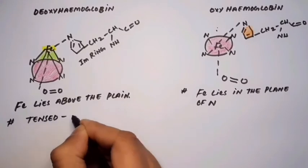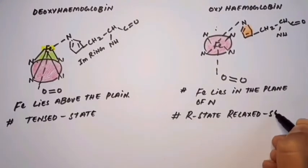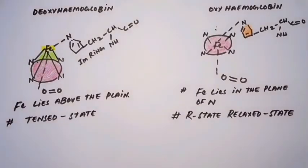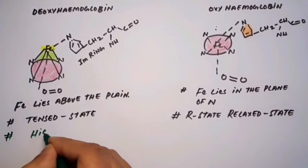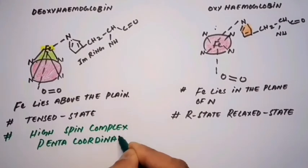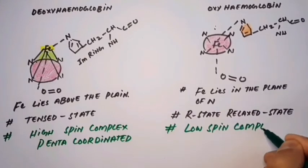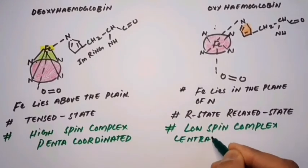Deoxy form is also known as tensed quaternary state or T-state. Oxyhaemoglobin, also known as R-state, is the relaxed quaternary state. Deoxyhaemoglobin is high-spin complex and is pentacoordinated with respect to the central metal atom iron. Oxyhaemoglobin is low-spin complex and the central metal atom is hexacoordinated.